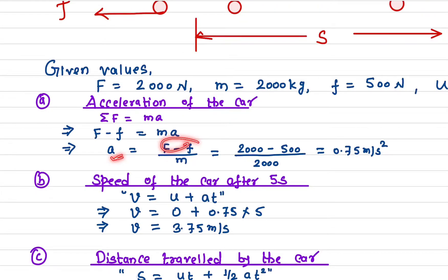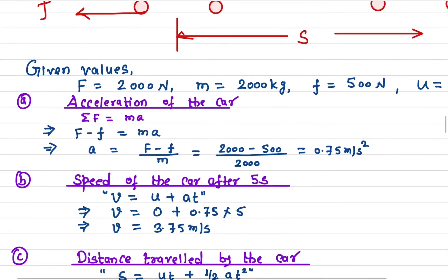The F is given as 2000 and friction force is 500, mass of the car is 2000. If I plug in, I will get the acceleration to be 0.75 meter per second squared, and the direction of this acceleration is along this way.